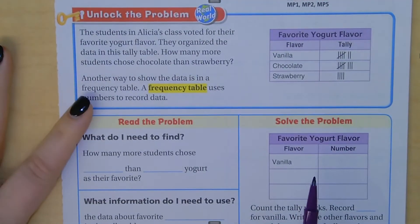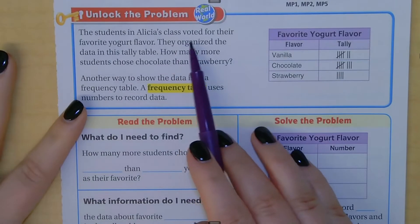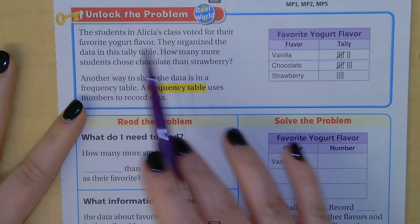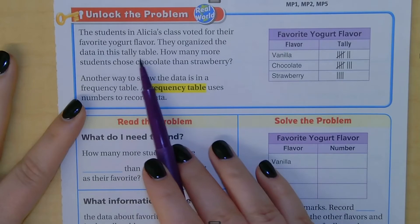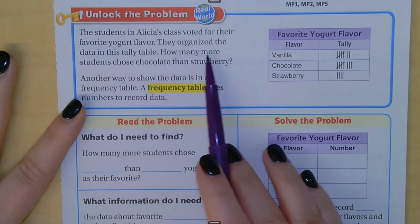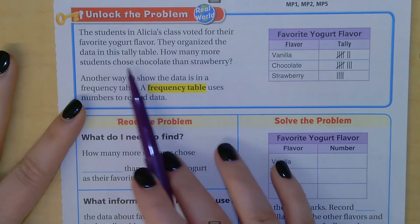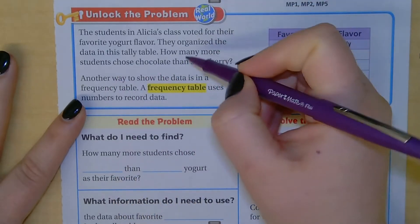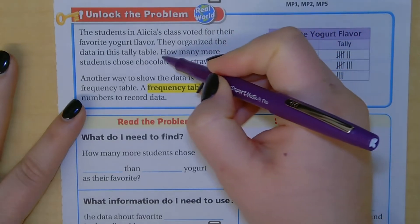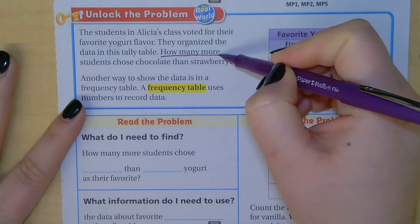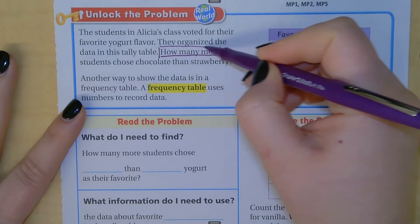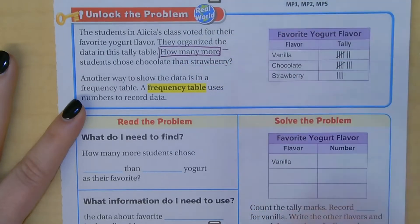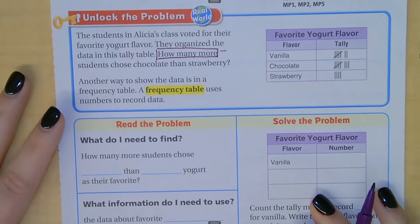Unlock the problem. The students in Alicia's class voted for their favorite yogurt flavor. They organized the data in this tally table. How many more students chose chocolate than strawberry? I hope you noticed it said 'how many more' and recognized that 'how many more' is a clue word for subtraction. We should start picking up on these clue words.